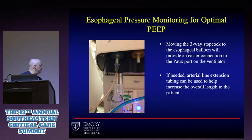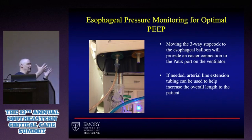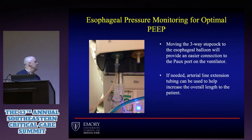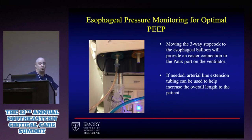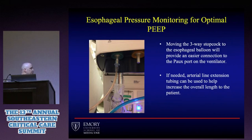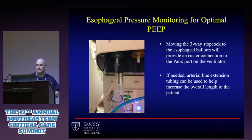Hooking it to the machine is very simple — it's a direct connection to the ventilator, and you access the ventilator to get your pressure measurements, which are mathematically calculated for you. If the machine is far from the patient, you can use art line tubing for extra length from the catheter to your ventilator to minimize any pressure dampening.